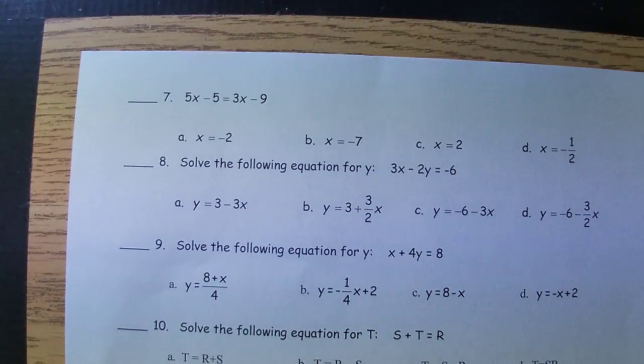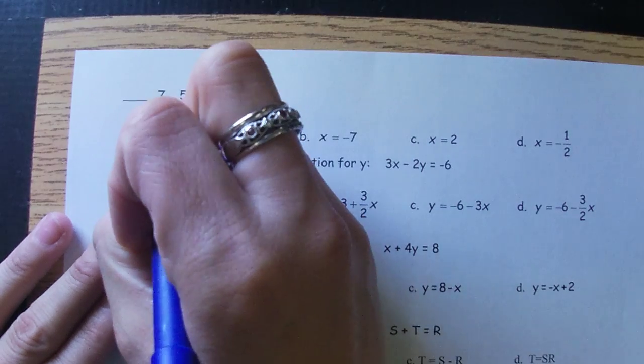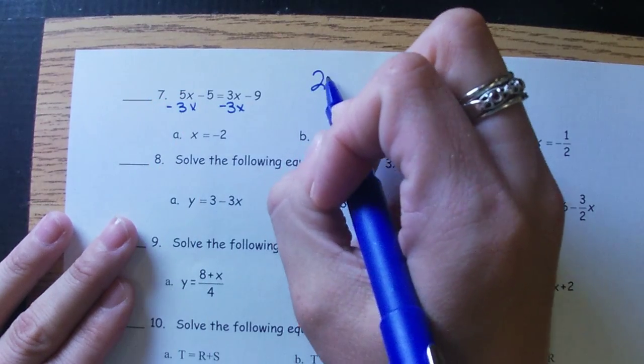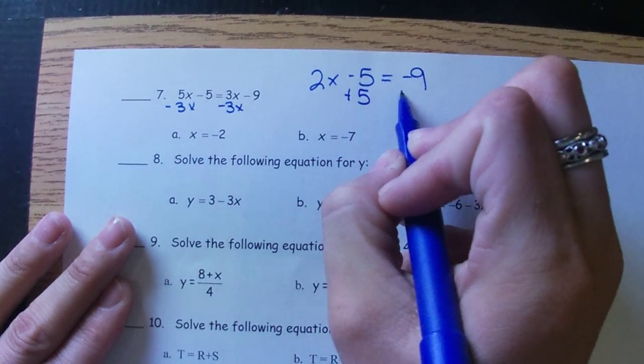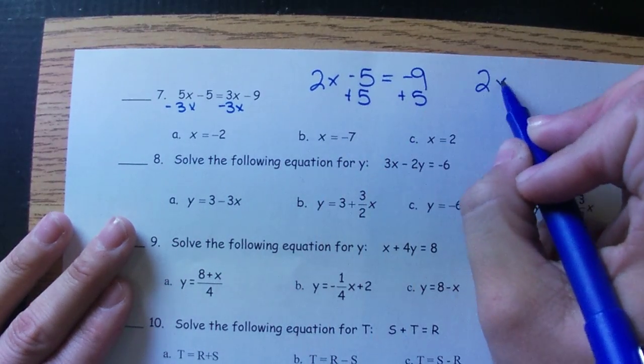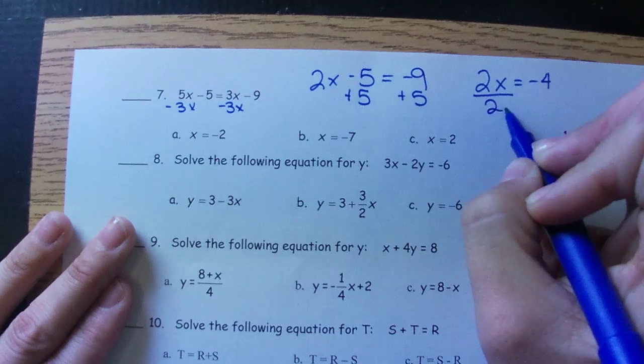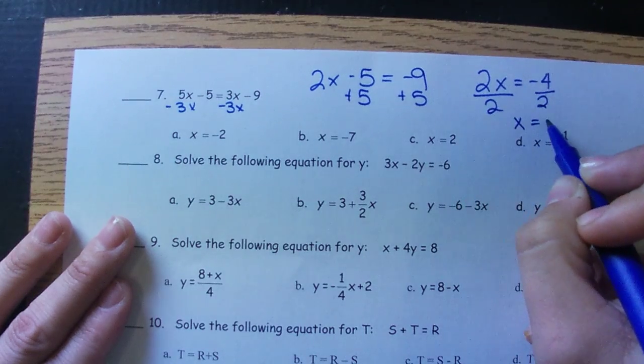Number seven, we have variables on both sides. So to get them together, we're using the opposite sign. Then we undo addition and subtraction. We'll get X equals negative 2.